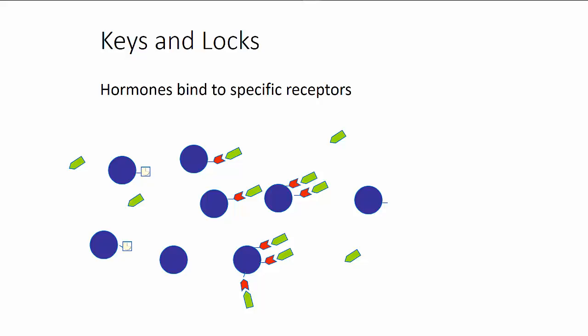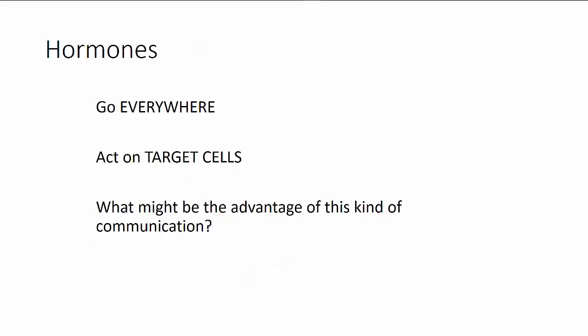For example, the hormone glucagon will fit into a receptor on the liver cell to signal the cell to release glucose. So hormones go everywhere. They act on target cells, cells that have receptors for the hormone.